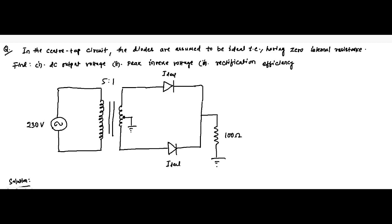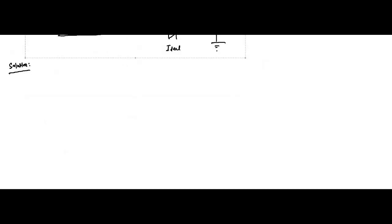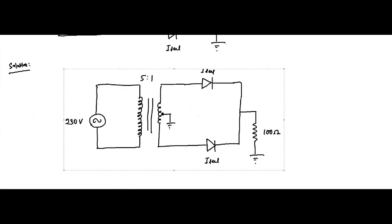Hello friends, welcome to Engineering Tutorial. Here is another question on full wave rectifiers. The question is: in the center tap circuit, the diodes are assumed to be ideal, that is having zero internal resistance. We have to find the DC output voltage, peak inverse voltage, and rectification efficiency. This is the circuit that is already given in the question, so we simply copy it here.